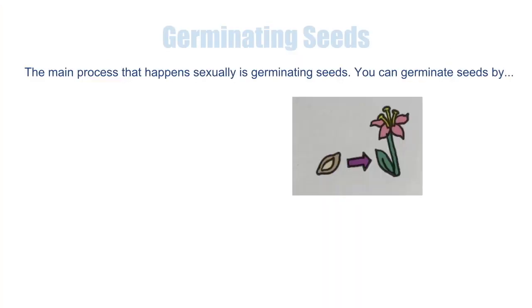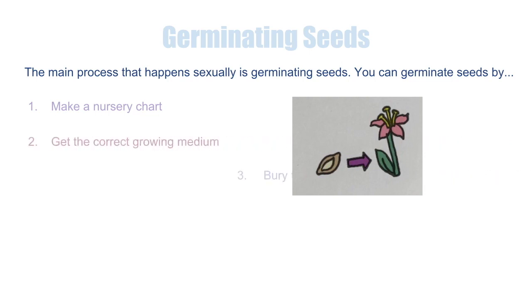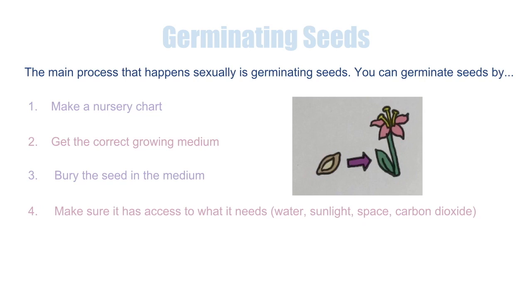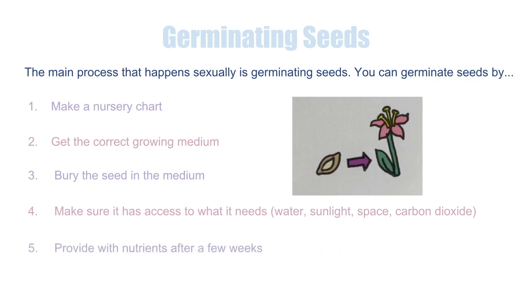The main process that happens asexually is germinating seeds. You can germinate a seed by making a nursery chart, getting the correct medium, burying the seed in the medium, and making sure it has access to what it needs: water, sunlight, space, carbon dioxide, etc. Provide nutrients after a few weeks.